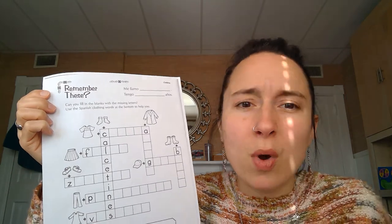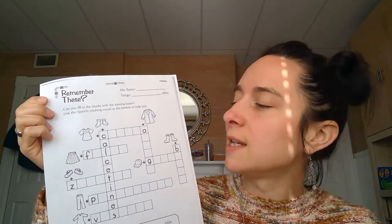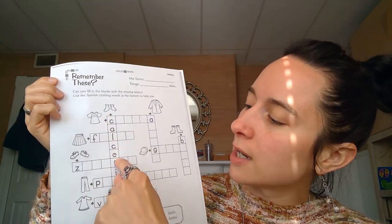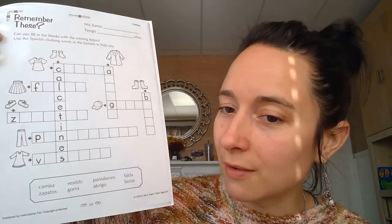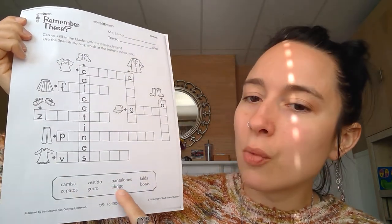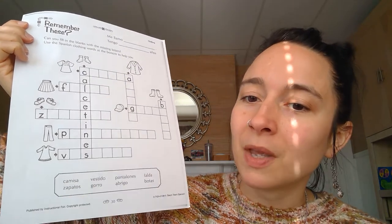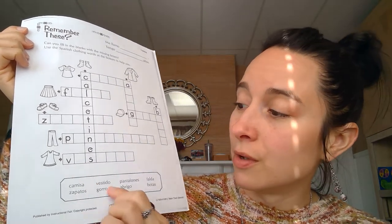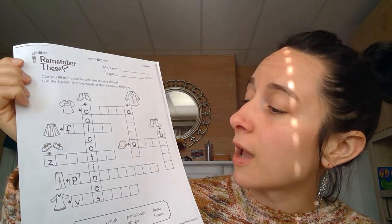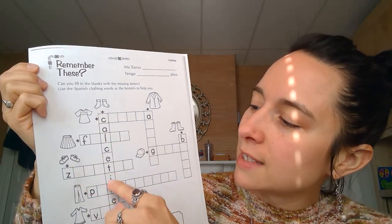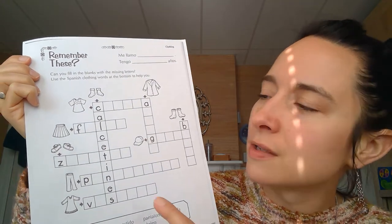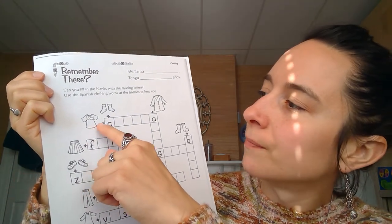There's also a word bank on the bottom that's going to help you remember what some of the words are, or if you don't know how to spell it, it'll help you. Calcetines is already filled in, so let's go over to this one.